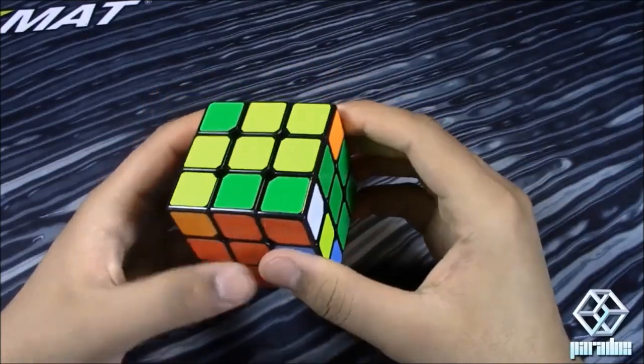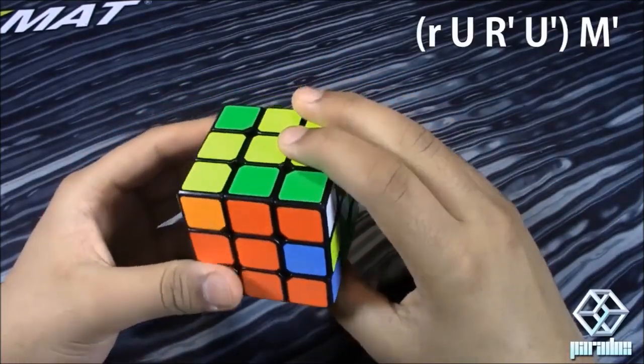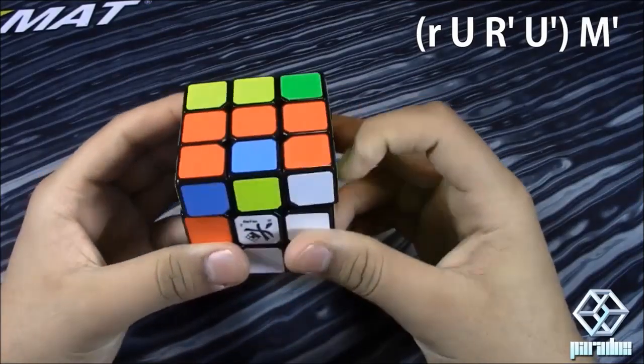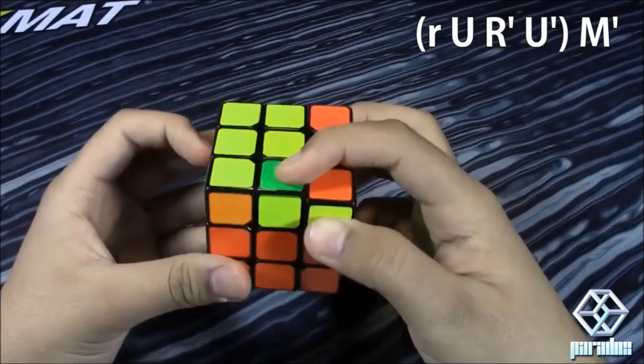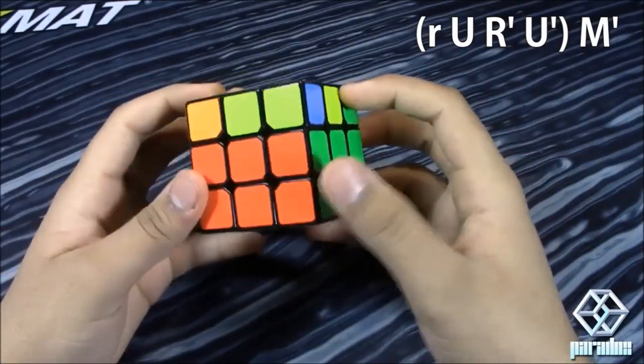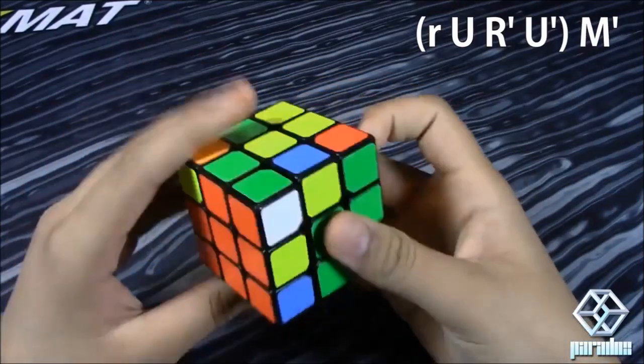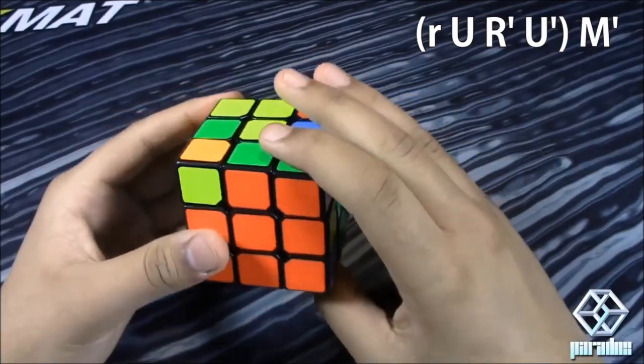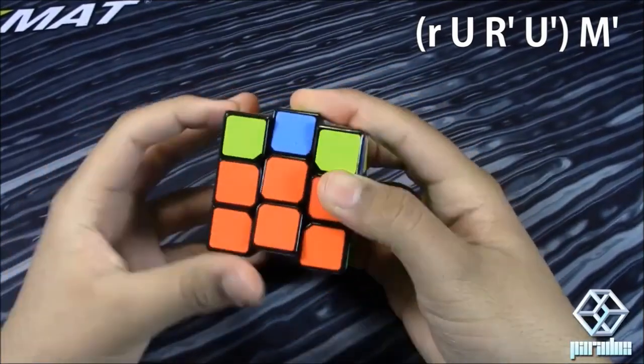So the next way to insert this is by doing something like this: a lowercase R, U, R', U', and then just do a middle slice to revert this back to normal. And then here we have the pair that is solved, so I'll go over that again. So if you have something like this, you can do lowercase R, U, R', U', and then the middle slice.